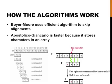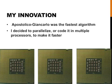Since Boyer-Moore skips certain alignments, it is faster than naive exact matching. Apostolico-Giancarlo is the fastest because it stores characters differently.